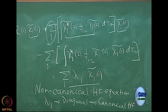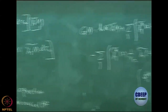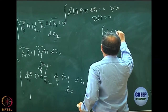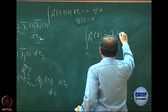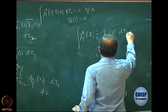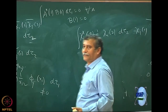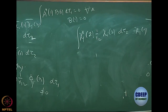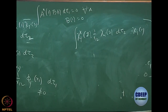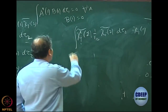The exchange term is: chi j tilde 2, 1/r_12, chi i tilde 2, d tau 2, chi i tilde 1. There is no interpretation because chi j tilde 2 and chi i tilde 2 is not a density — this is j, this is i — sum over j of course.